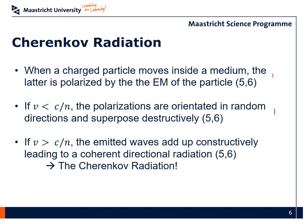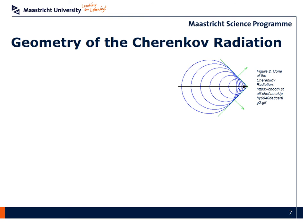On the other hand, if the particle moves faster than the speed of light inside the medium, the polarizations will be directional, and the light emitted adds up constructively into a coherent radiation, which is the Cherenkov radiation. We can grasp this better looking at the geometry of this effect.